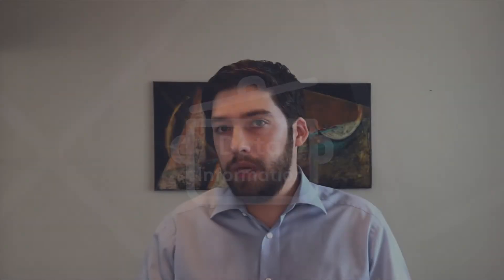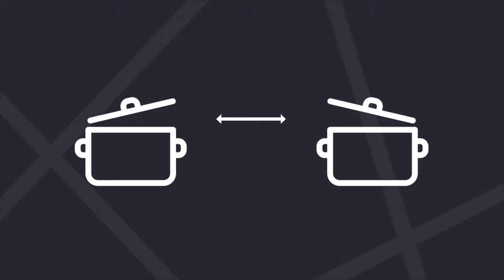If you don't connect this pot with anything, there will not be any automatic exchange of data. All data that gets into that pot needs to be put there manually and also taken out manually. An API lets you connect two different pots with each other.